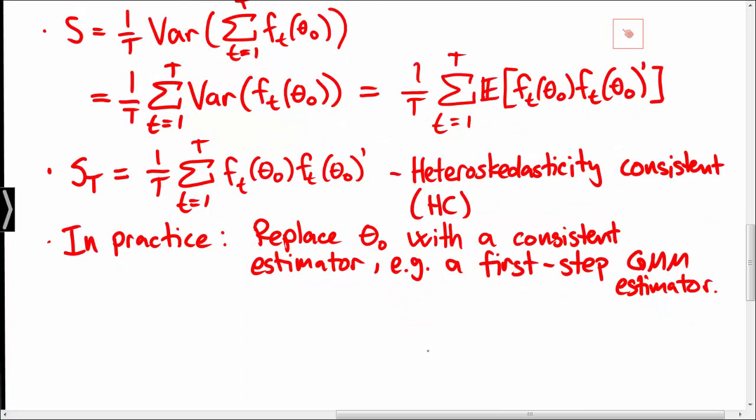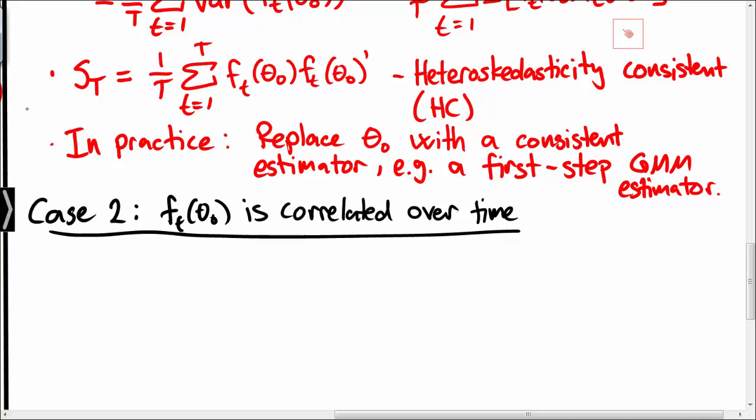The second case we will consider is when Ft is actually correlated over time, and that yields a more complex structure of the covariance matrix S.